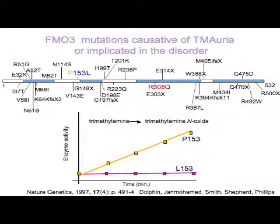FMO3 is a protein made up of 532 amino acids, and the numbers on this bar refer to the amino acid that is changed as a result of a particular mutation. If you focus on P153L, this means that the amino acid at position 153 is changed from a P — P stands for proline — to an L, where L stands for leucine.